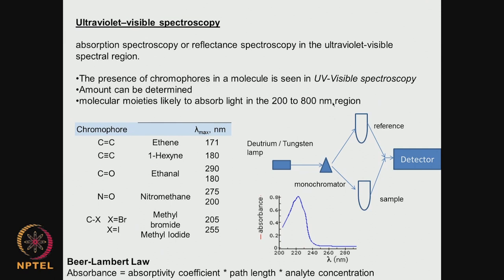Generally when we talk about UV and visible, we are talking in the region 200 to 800 nanometers. The instrument has a deuterium tungsten lamp, then a monochromator, and the light passes through the sample and is detected. We have a reference, and with respect to the reference we can monitor whether a chromophore is present and at what concentration. The spectrogram shows a peak at a particular lambda max, which is characteristic of the type of chromophore present.